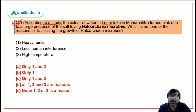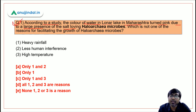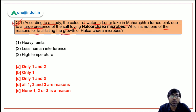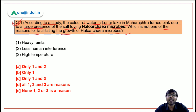Question one: According to a study, the color of water in Lonar Lake in Maharashtra turned pink due to a large presence of salt-loving Haloarchaea microbes. Which is not one of the reasons for facilitating the growth of these microbes? So recently a study came in which Maharashtra's Lonar Lake turned pink.